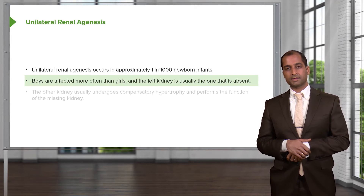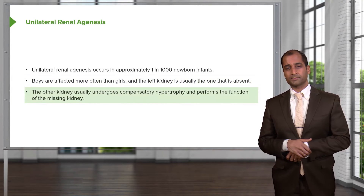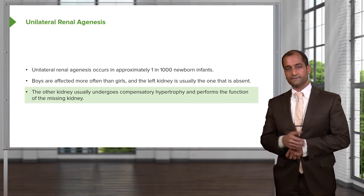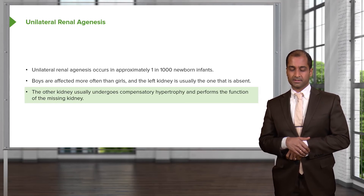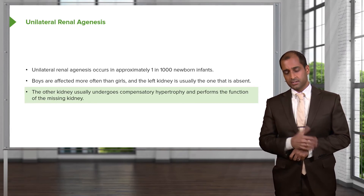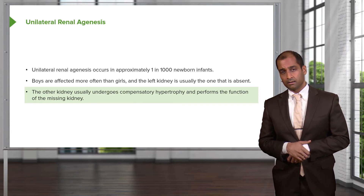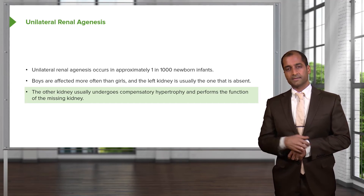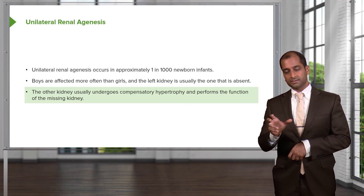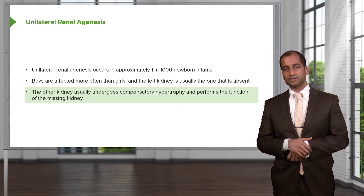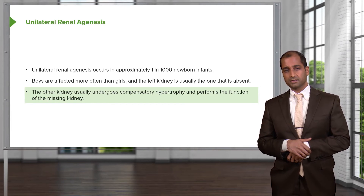We'll talk about a few other issues later on with renal cell carcinoma. In this case, the left kidney is absent much more so. The other kidney undergoes something called compensatory hypertrophy — and that's amazing, actually. Even when you do renal transplants, that dead kidney is usually left within the patient because it's too difficult to take out — the kidney is retroperitoneal. You then insert a new kidney from the anterior side. With unilateral renal agenesis, the remaining kidney will undergo compensatory hypertrophy and perform the function of the missing kidney.